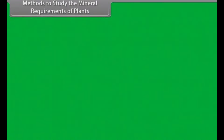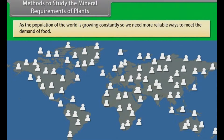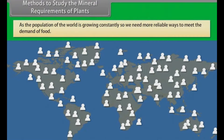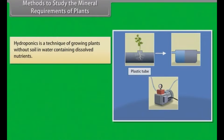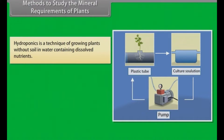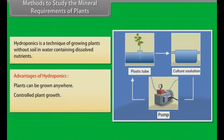Methods to study the mineral requirements of plants: as the population of the world is growing constantly, we need more reliable ways to meet the demand for food. One such technique is hydroponics — a technique of growing plants without soil, in water containing dissolved nutrients. Advantages include: plants can be grown anywhere, controlled plant growth, and water and nutrients are conserved.